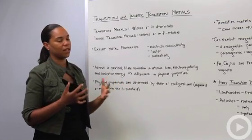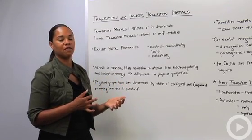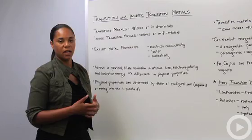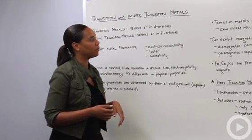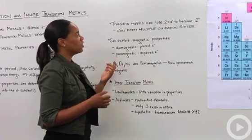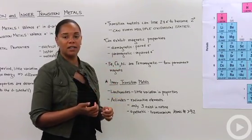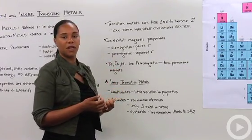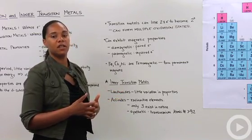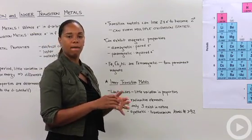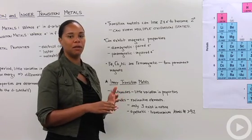And so when I say the electron configurations, I'm referring to the fact that if there are unpaired electrons, it causes the physical properties to be a little bit different within the family. So transition metals can lose two s electrons to become two plus ions, and they can also form multiple oxidation states. So that's something different from the s block elements and p block elements.